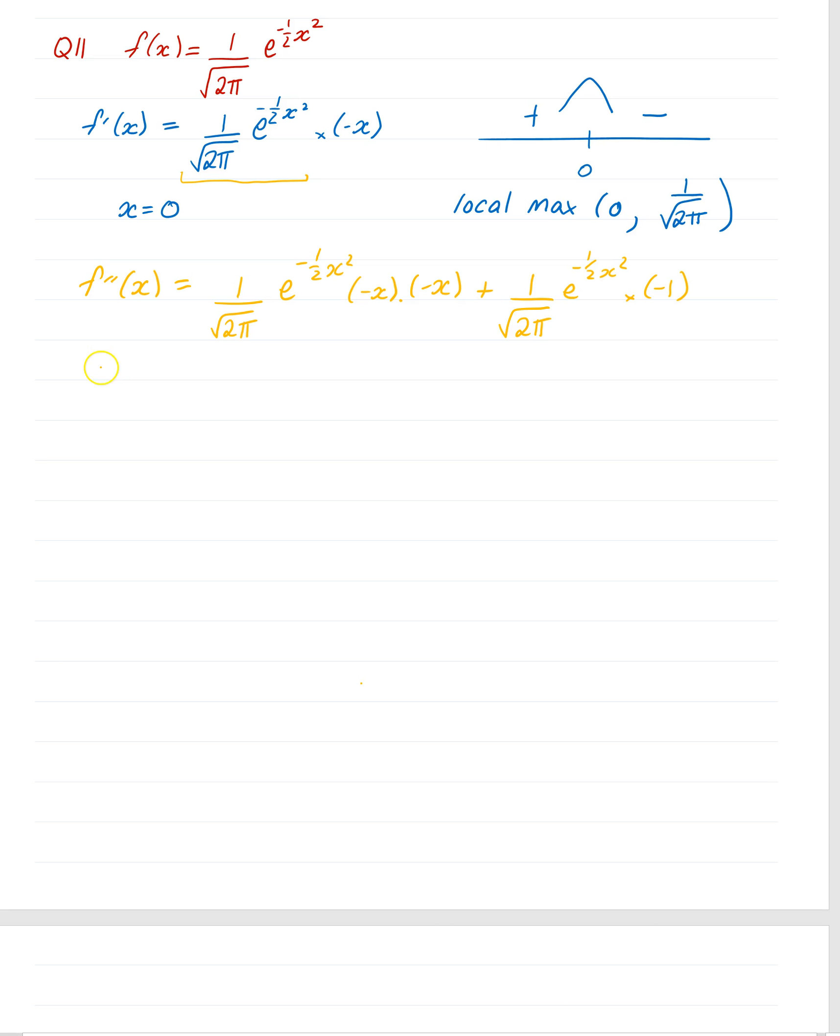It looks a little bit ugly. However, we should be able to see oodles and oodles of common factors here. So we've got a common factor of that, and we've got another common factor of that same thing there. So let's pull that out. If we pull out 1 over root 2π e to the minus a half x squared, what we're left with in the bracket is minus x times minus x is x squared, take 1.